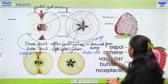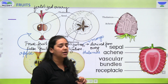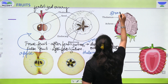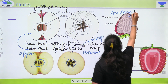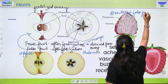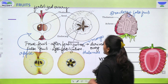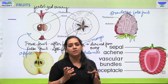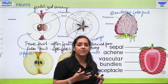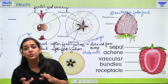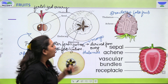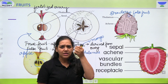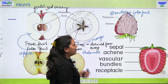I hope yahan tak sab ko samajh mein aa gaya. Ab hum ek aur example ki baat karte hai — strawberry. Strawberry is also an example for false fruit. Yeh bhi ek example hai false fruit ka. Yahan pe bhi aap jo khate ho, jo fleshy part strawberry mein hum khate hai, usse hum bulaate hai thalamus, jo banta hai after fertilization. Thalamus fleshy kab hota hai — after the process of fertilization. Aur aapne dekha hoga strawberry ke upar chhote chhote seed jaise marks dikhay dete hai, kabhi black in colour.